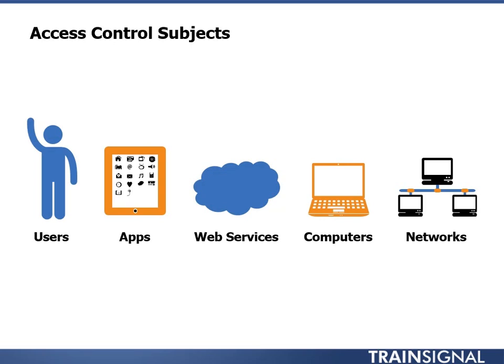Networks themselves can be subjects. Networks are typically resources which the SSCP exam calls objects, but networks can be subjects as well because a server or service can allow or deny access from particular networks. For example, you might set up an important file server to only allow access from networks that have been physically secured. In this case the network itself is a subject because it has been authenticated and authorized to access the resource — the file server, the object.